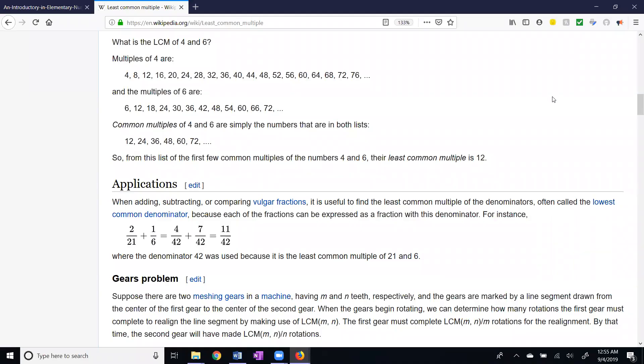Kind of like in the last video, we'll just take a quick peek here at Wikipedia. The beginning stages of finding least common multiple is the listing method.